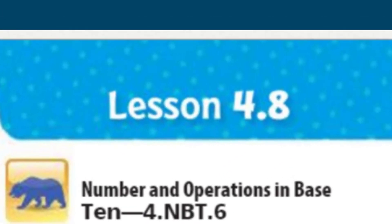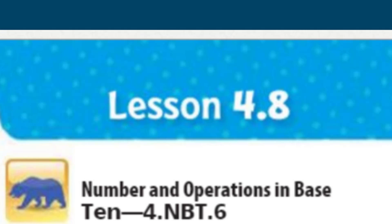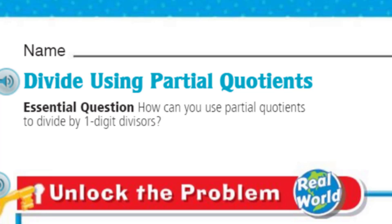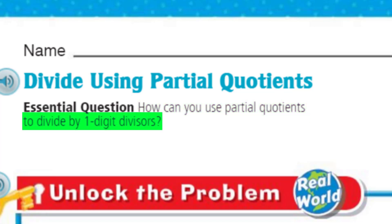We're doing lesson 4.8. If you've been following this chapter at all, we just finished doing some division using repeated subtraction. So the focus on this chapter is clearly division. And now we're going to be looking at a topic: dividing using partial quotients. Our essential question — what the objective is that we are to learn in this lesson — is how can you use partial quotients to divide by a one-digit divisor?